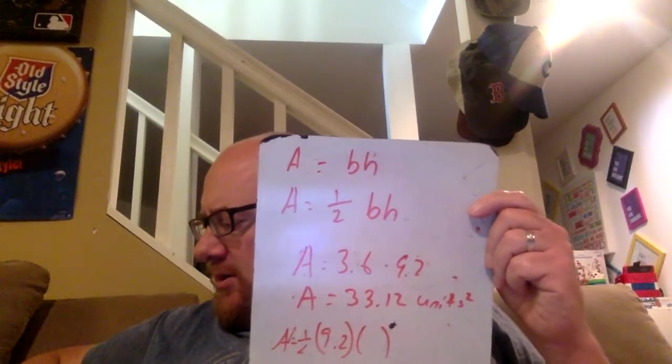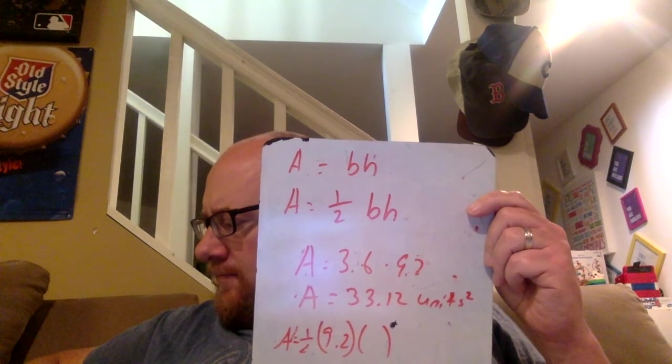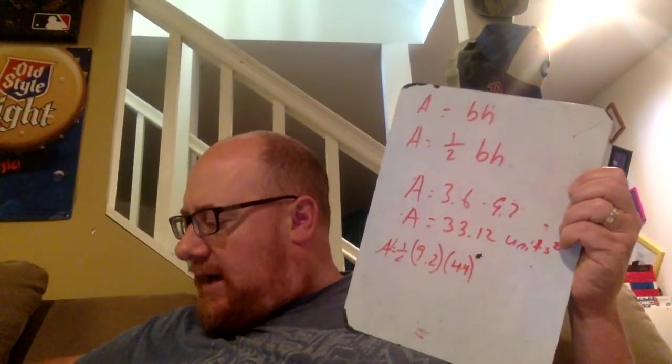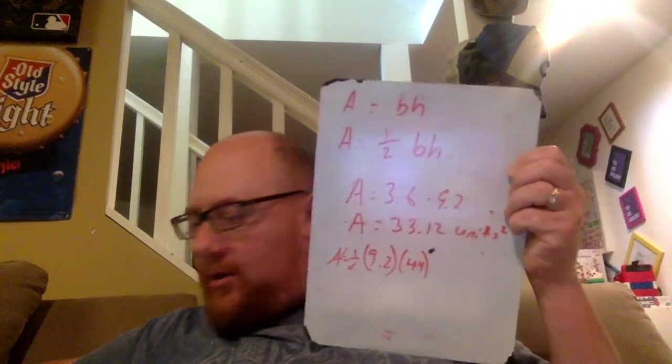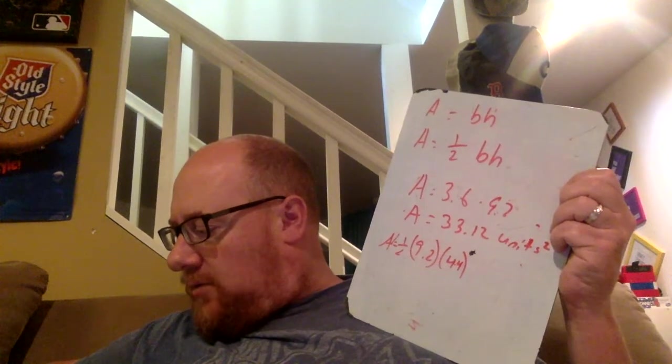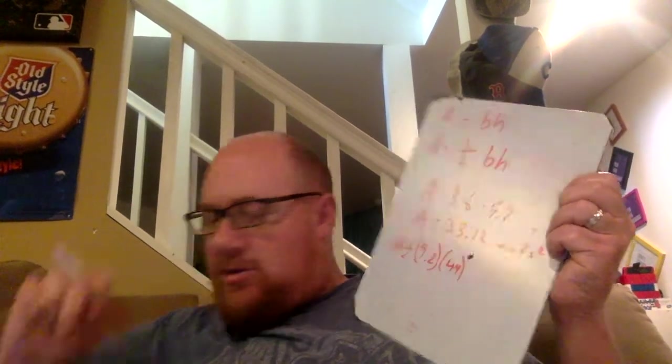When all this work is finished, so 0.5 times 9.2 times 4.4 equals 20.24. So the area of the triangle is 20.24.